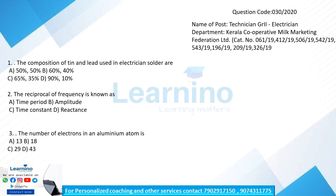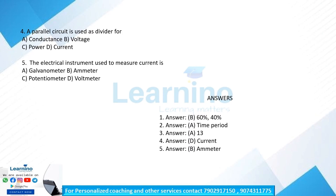Time period is the reciprocal of frequency: T = 1/f, f = 1/T. Aluminum atom has 13 electrons. Question: number of electrons in aluminum — 13 is the correct answer, option A. Question 4: a parallel circuit is used as a divider for — option D: current. A parallel circuit is used as a current divider.